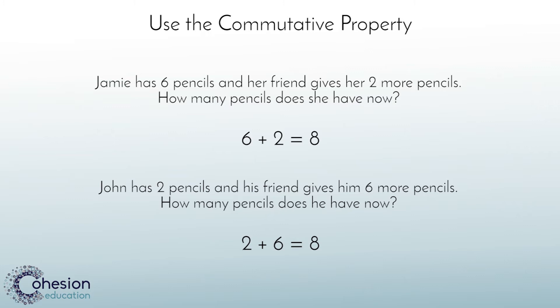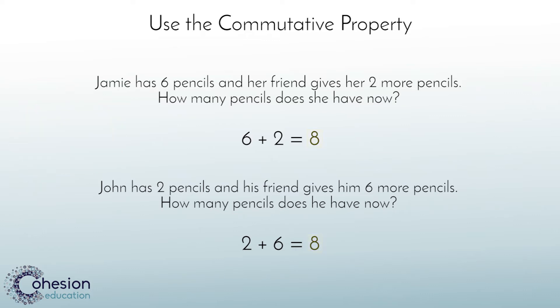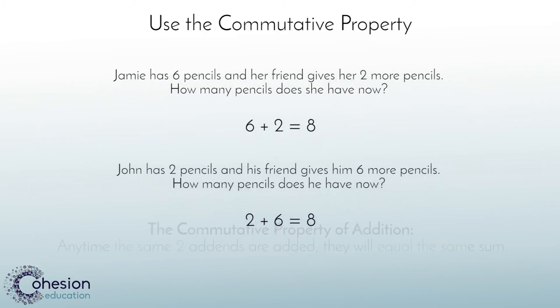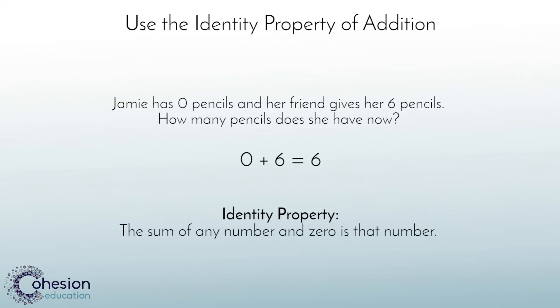After solving each problem, students would be asked to discuss what they notice about the numbers and operations within the word problems. The hope would be that students would recognize that both problems had the same sum or answer. After making this discovery, students would be introduced to the commutative property of addition, explaining that any time the same two addends or numbers are added together, they equal the same sum or answer. The same process would be used to help students identify the identity property of addition.